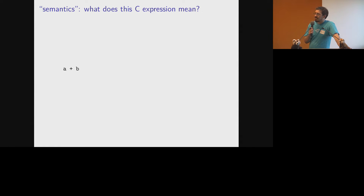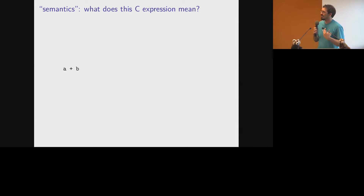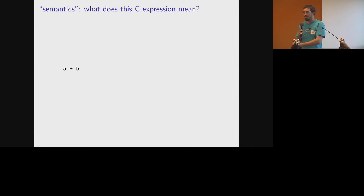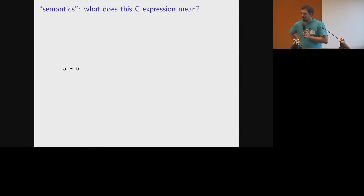The key thing is that Corrode goes to a lot of trouble to make sure that the Rust it generates, as best I can figure, matches what the C specification says - it does exactly the same thing. So the C abstract machine specification in C99 or C11, if you follow the steps that the abstract machine specification says your program should go through and look at the generated Rust, you should see the Rust going through those same steps.